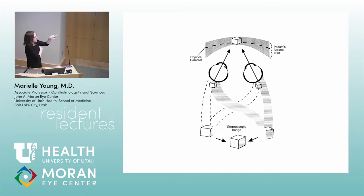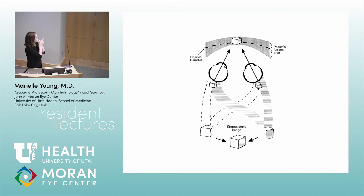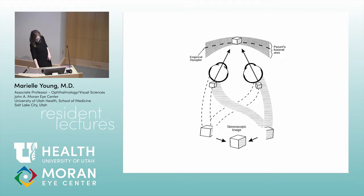Panum's fusional area is also what gives you stereo. The images are a little bit different from one eye to the other, but your brain can fuse them together and produce a stereoscopic image. The stereoscopic area you can perceive is a little bit bigger than Panum's fusional area — essentially the points in space you can make into one image with both eyes working together.